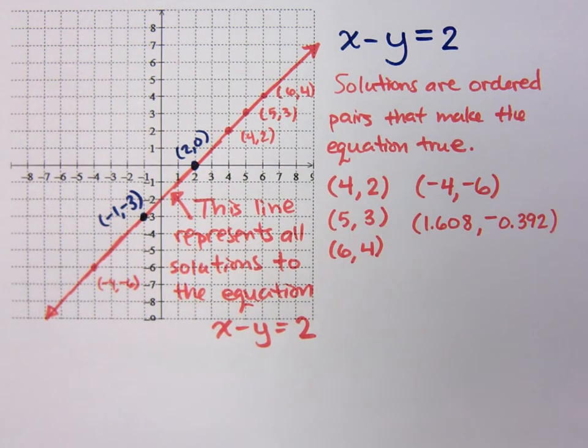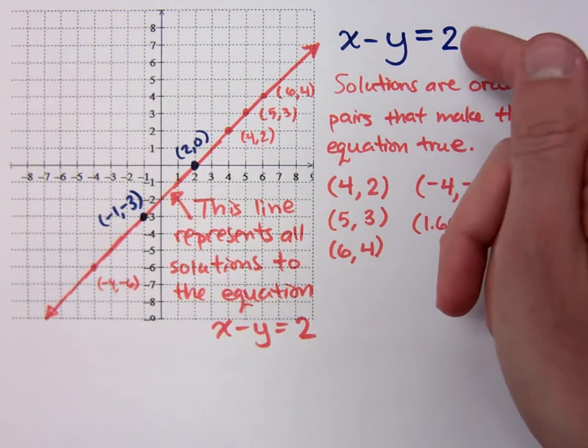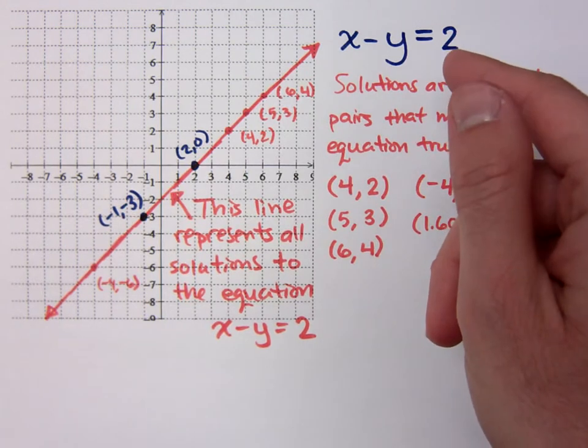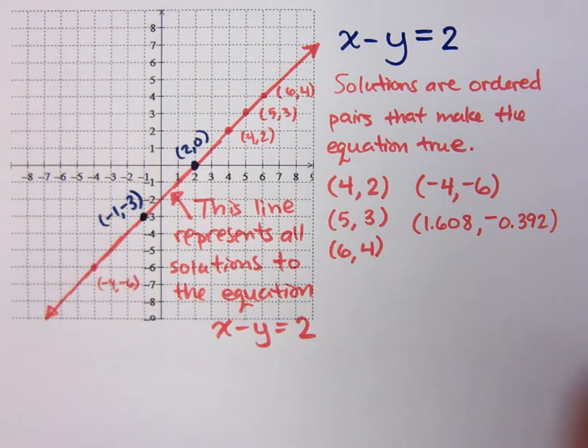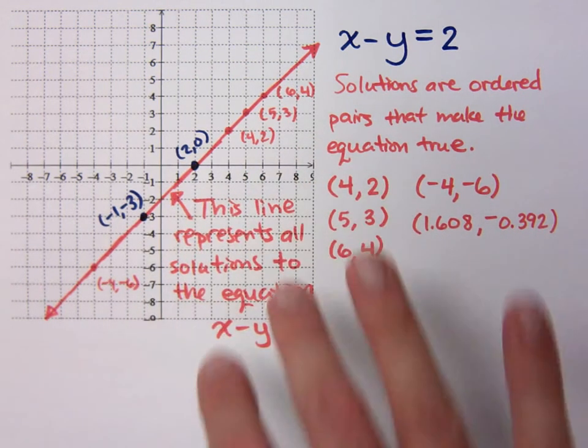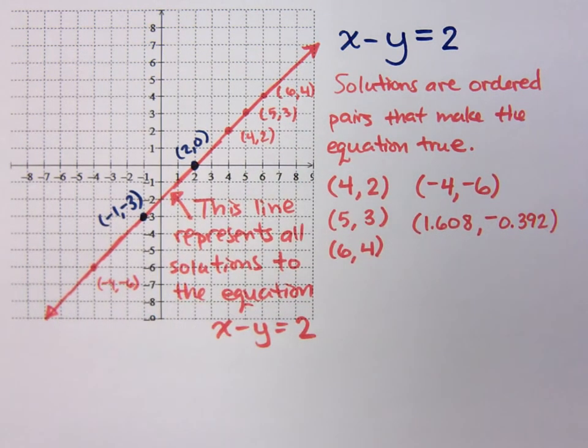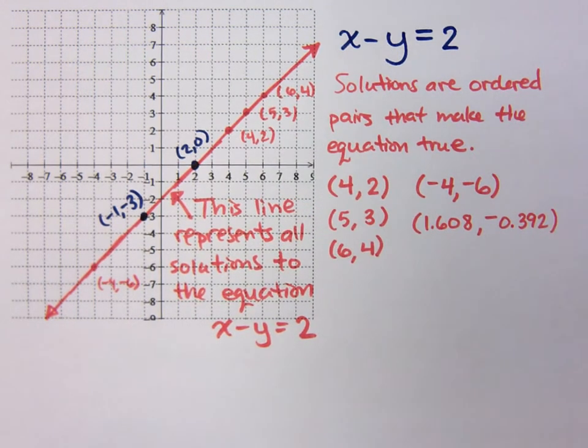Now, the equations that we come across are not always easy where we can just look and find ordered pairs that satisfy this guy. So we talk about other graphing techniques using intercepts, using the slope, things that we've already talked about in previous classes. So we're just going to quickly review all of that and make the connection, connect all that stuff, intercepts and slope, and even what we have here connected all together.